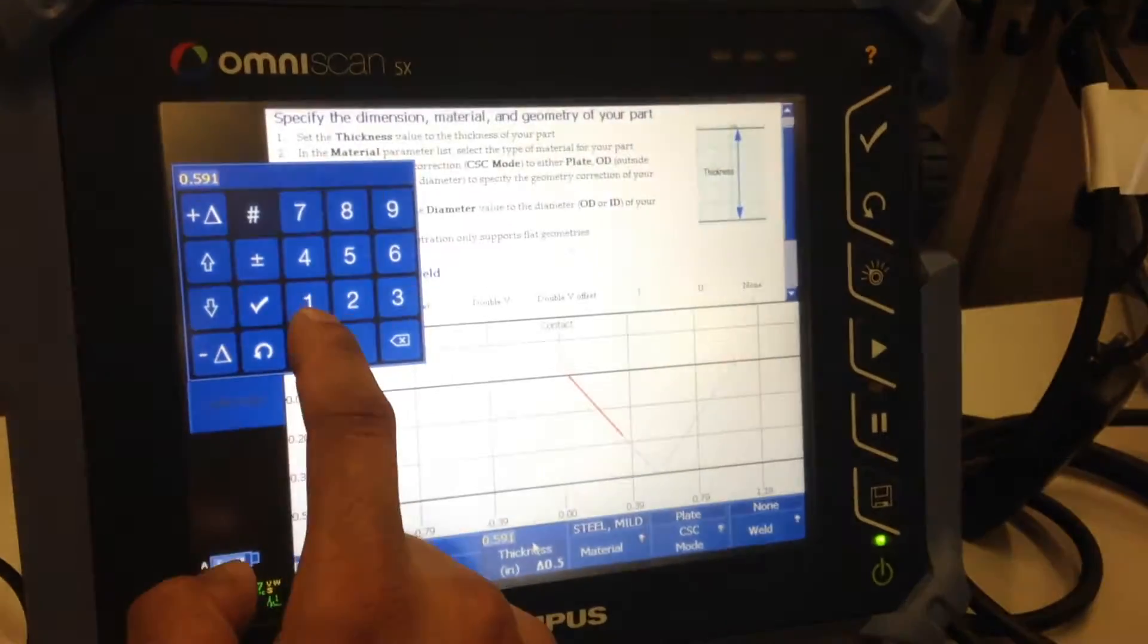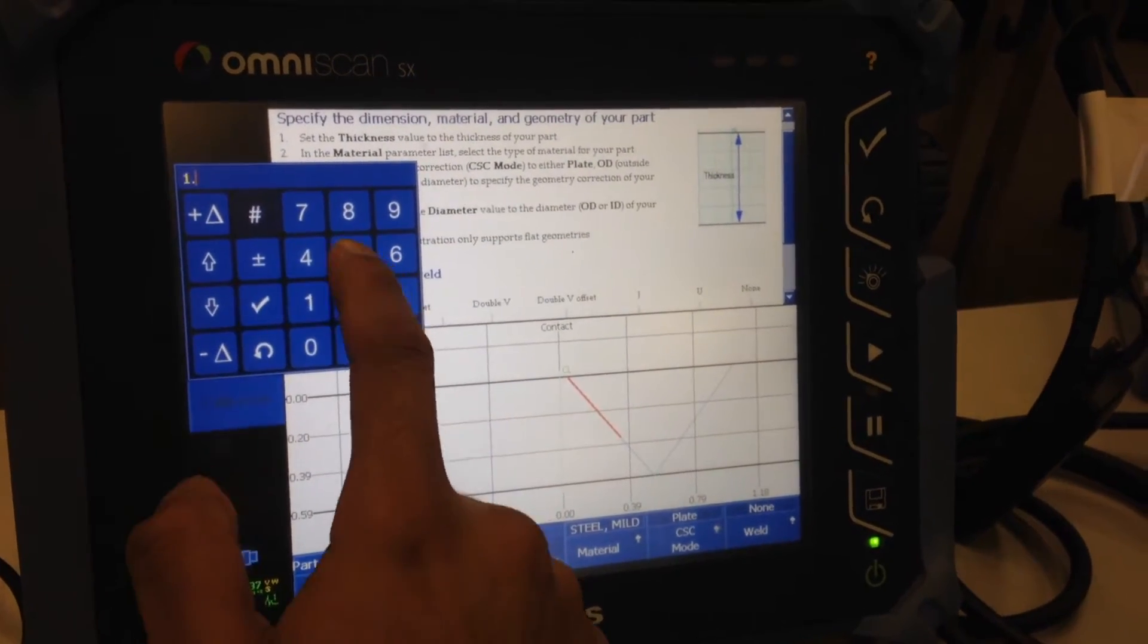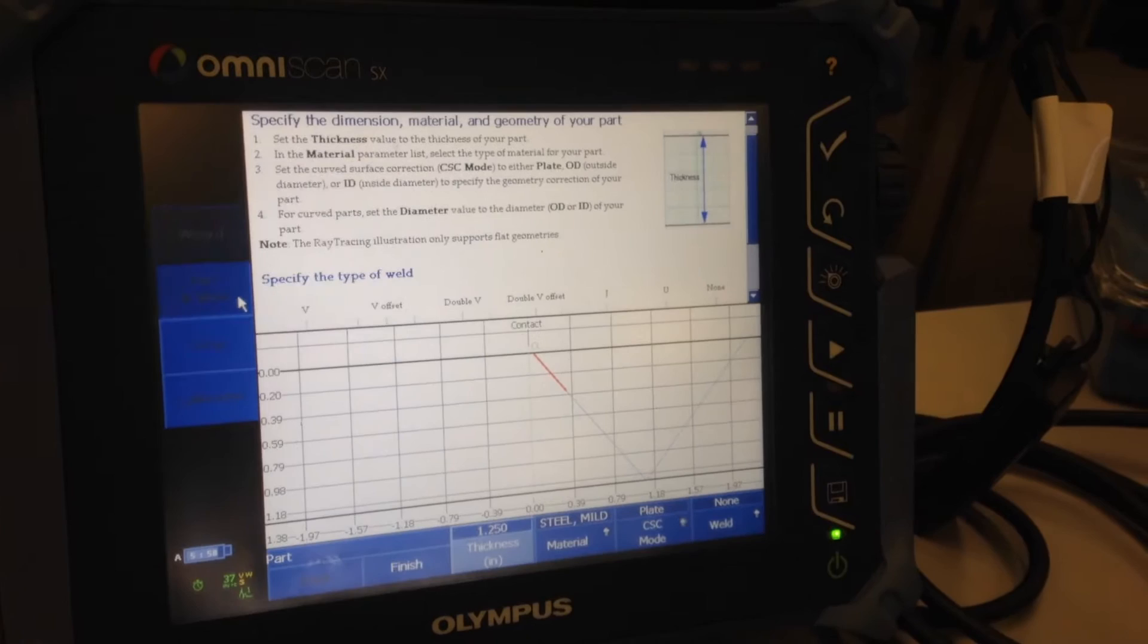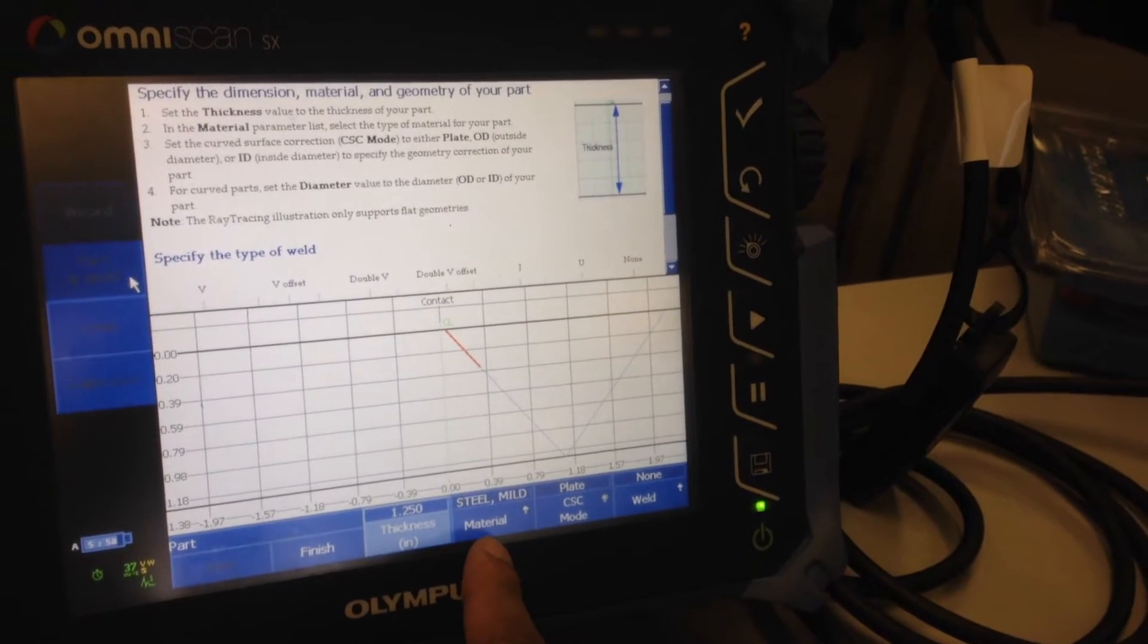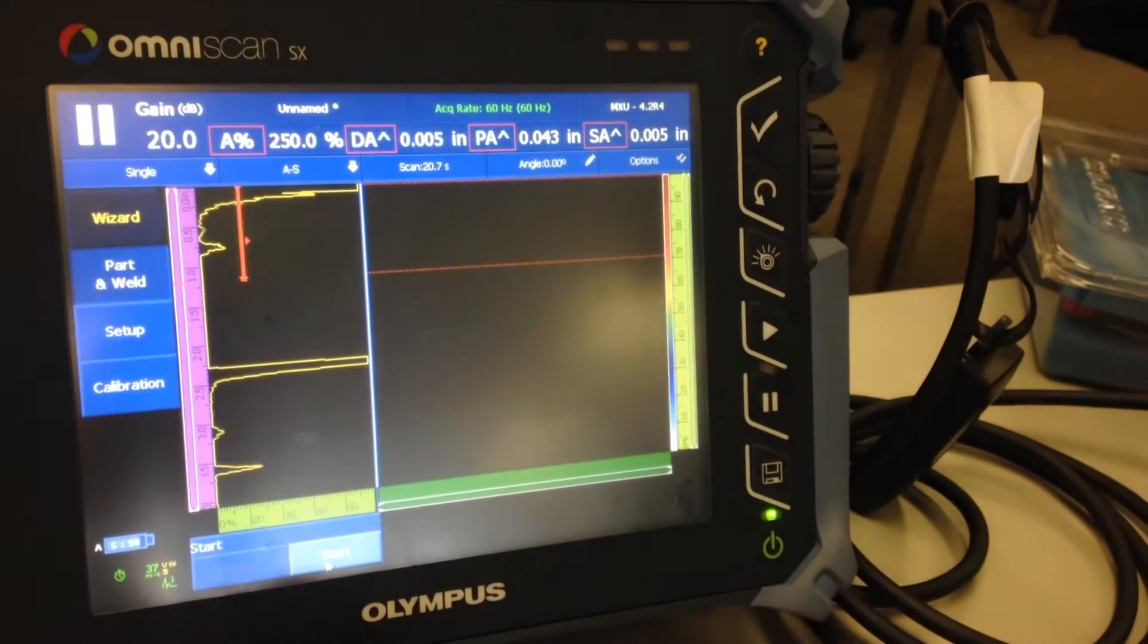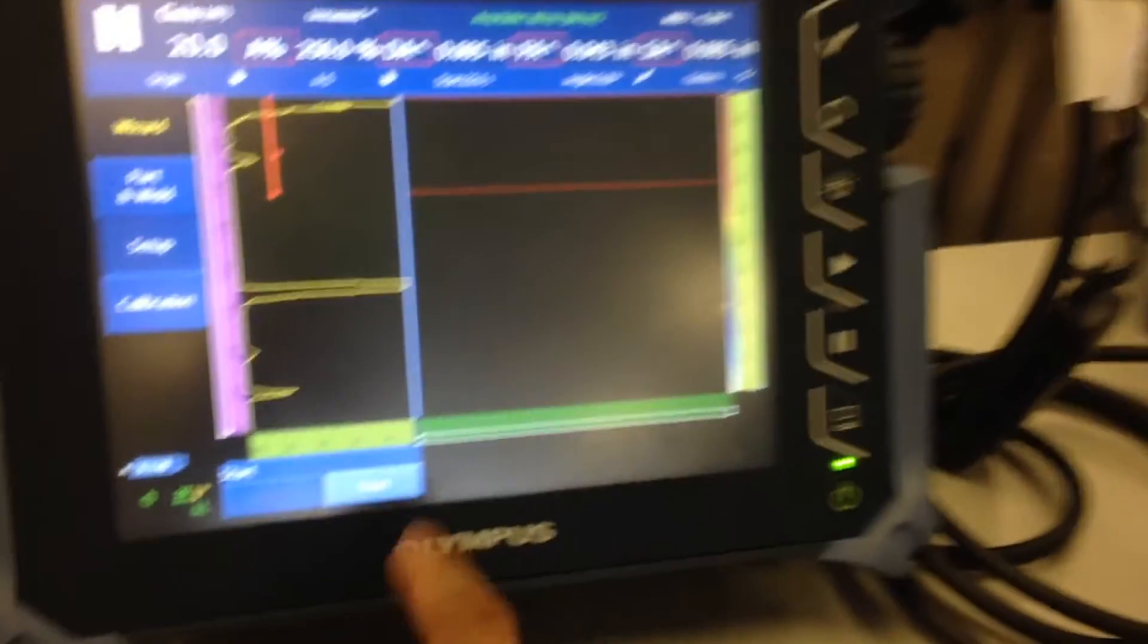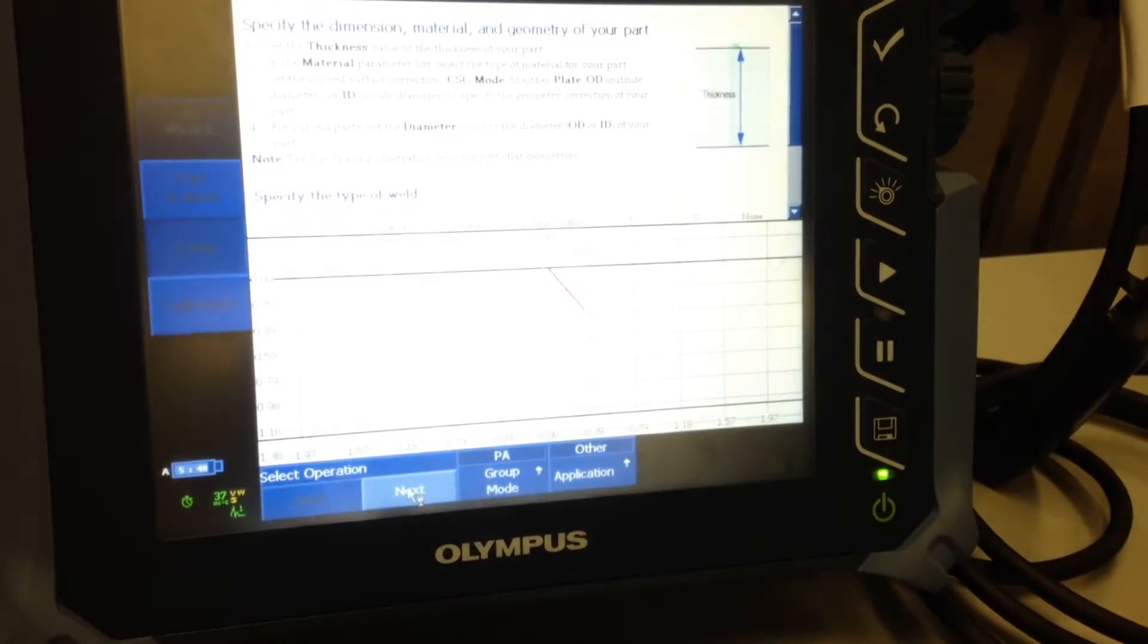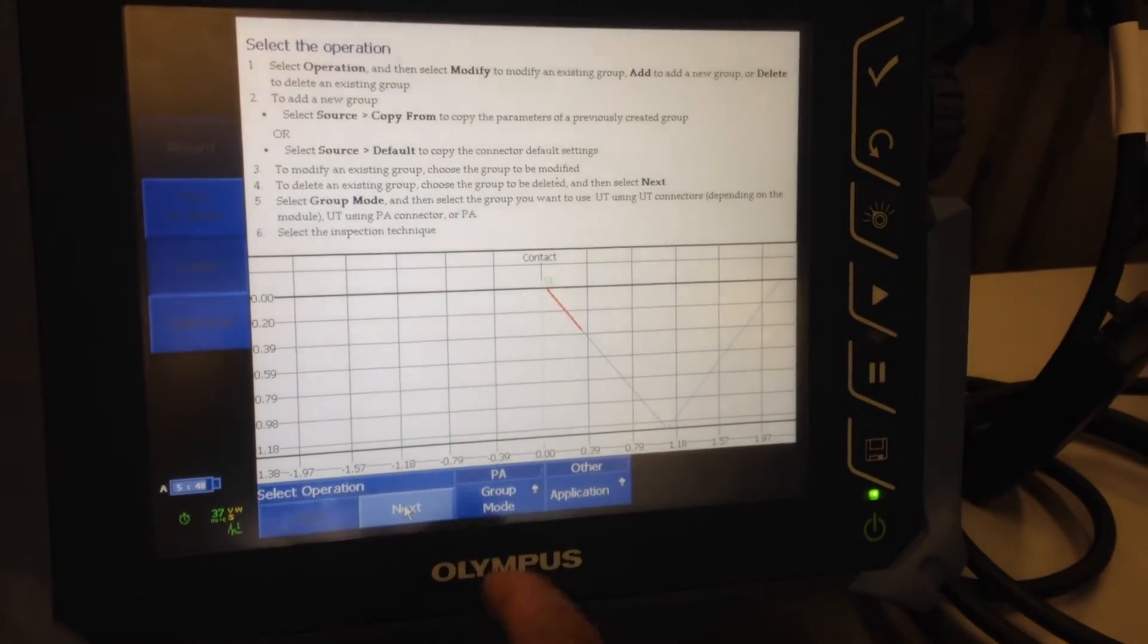Then go to setup, click start, group mode, phased array application, leave it on other, click next.